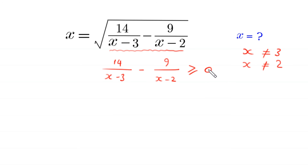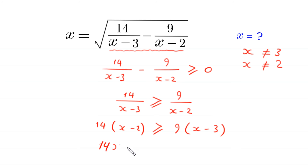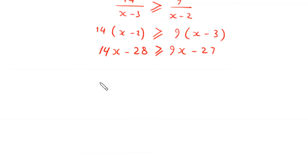If we move the negative expression to the right-hand side, then 14 over (x minus 3) must be greater than or equal to 9 over (x minus 2). This implies that 14 times (x minus 2) must be greater than or equal to 9 times (x minus 3). Expanding gives 14x minus 28 must be greater than or equal to 9x minus 27. Subtracting 9x and adding 27 to both sides gives 5 times (x minus 1) must be greater than or equal to 0.